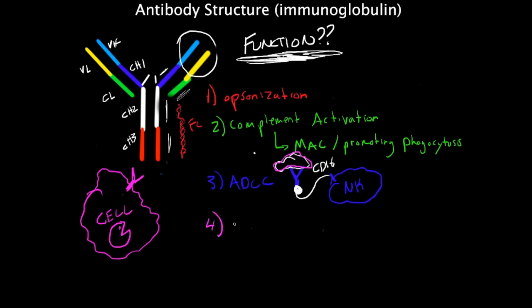You have transcytosis. This is the passage of antibodies across epithelial layers, which delivers certain classes of antibody, usually it's IgA, to the mucosal surfaces.